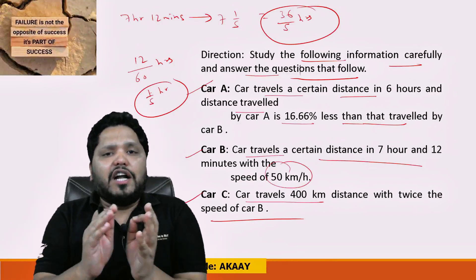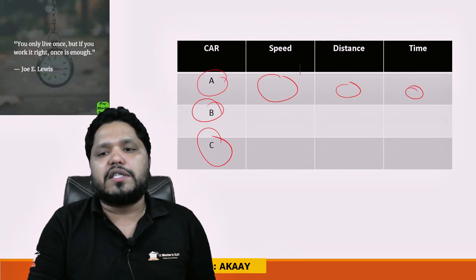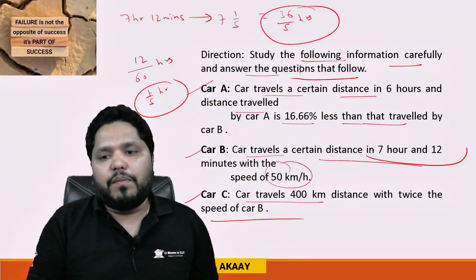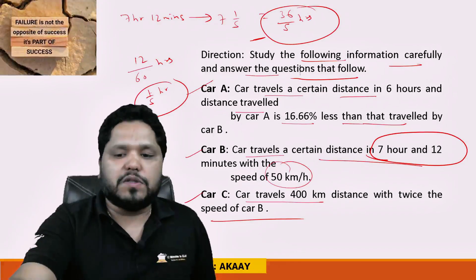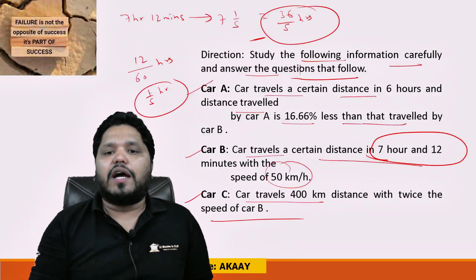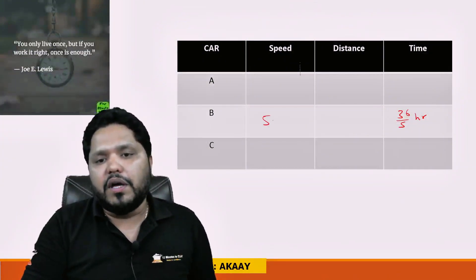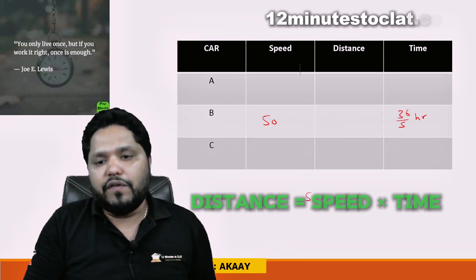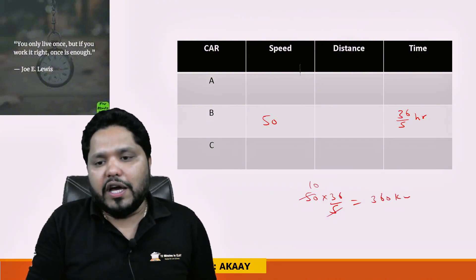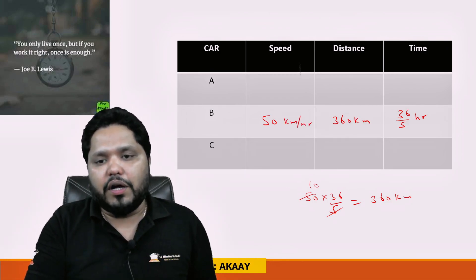Let's draw a table with Car A, Car B, and Car C — their speeds, distances, and times. For Car B, time is 36/5 hours and speed is 50 km/h. Distance is speed into time, so distance covered by Car B = 50 × (36/5) = 360 km. We now have Car B's distance as 360 km at 50 km/h.